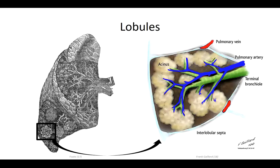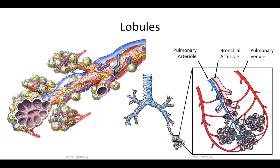In the healthy adult lung, approximately 300 million alveoli are available for gas exchange. At this level the pulmonary vessels have also divided to the point that they form a dense capillary network surrounding each of the alveolar sacs, creating the blood-gas interface where gas exchange occurs. Pulmonary arterioles travel in close contact with the bronchial tree, dividing into a dense capillary network that completely envelops the alveoli to maximize gas exchange. The oxygen-rich blood then collects into venules that run in the interlobular septa, ultimately fusing to form the pulmonary veins that return blood back to the heart.